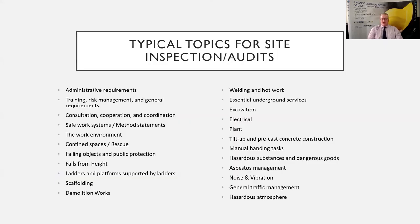Typical topics you will come across on site audits or inspections include looking at the administration requirements — basically the management system on site and the safety file — training records, risk management, and general requirements as to what activities are being undertaken. What consultation, cooperation or coordination is going on will come down to your communication and meetings. Your safe systems of work, method statements and methodologies — how the work has been done and how well those have been monitored and adhered to on site.